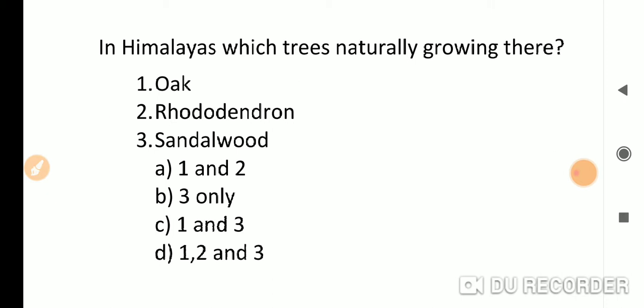In Himalayas, which trees naturally grow there? Oak and Rhododendron are found in Himalayas. Rhododendron is especially found in eastern and western Himalayas. Sandalwood is found in southern Bharat. So the correct answer will be one and two, option A.